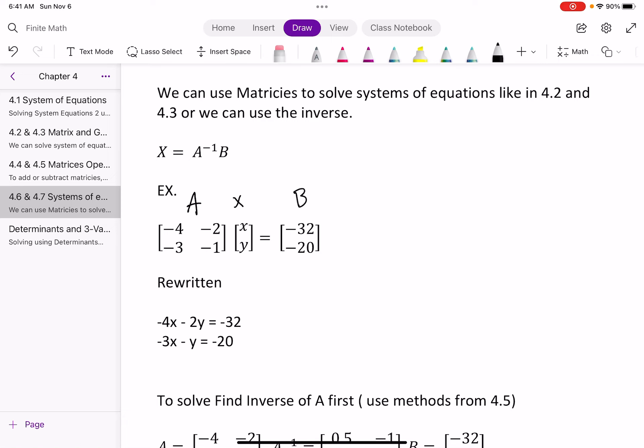So we can rewrite this out as a system of equations where negative 4 times x is negative 4x, negative 2 times y is negative 2y, and then equals negative 32, and then negative 3x minus y equals negative 20, just like we were doing in 4, multiplying matrices in 4.4.